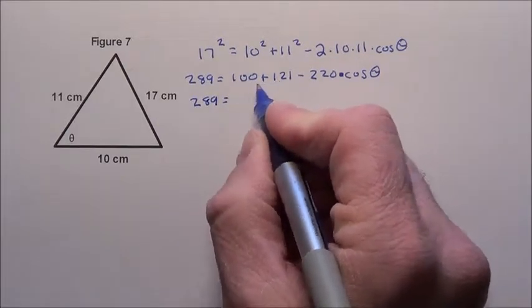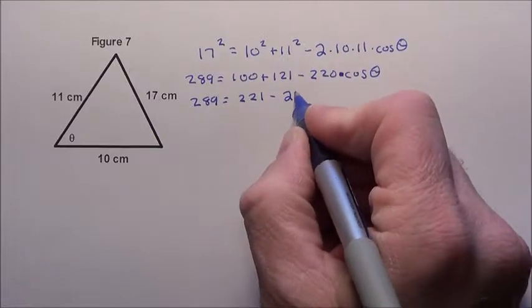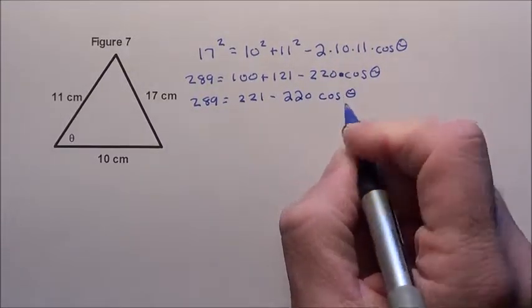So it's 289. Now I can put these two together because it's just a simple addition there, which is 221 minus 220 times the cosine of theta.